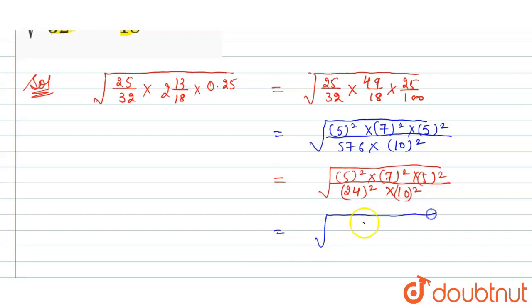Now we can write it as 5 times 5 divided by 24 times 10, whole squared.